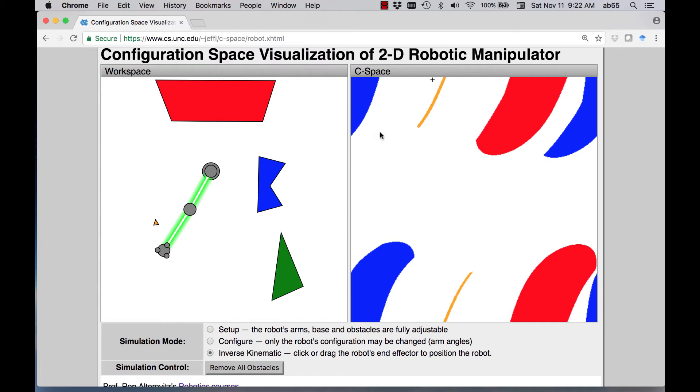So in this case, this 2D thing, we can actually explicitly represent the configuration space, so we can actually find the total path here. So I want to show you how you can find the total path here, and to do that, I made another demo.